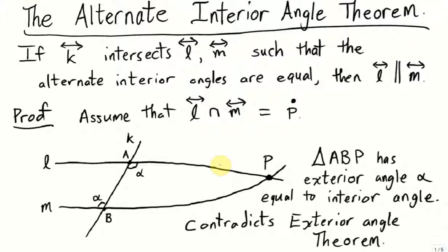This theorem says the following. If you have a line k, sometimes called a transversal, which intersects two other lines L and M, and the alternate interior angles are equal, so we have line L and line M, k is a transversal, and these two angles are equal, then we may conclude that the lines L and M are parallel to each other.